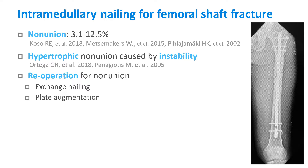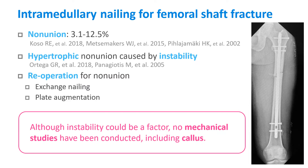Once non-union is recognized, the operation is performed mainly by exchange nailing or plate augmentation. However, despite instability being a factor, there has been no mechanical evaluation, including callus, which bears the load during the bone healing process.